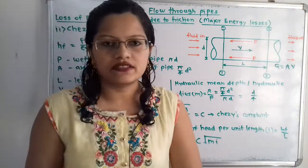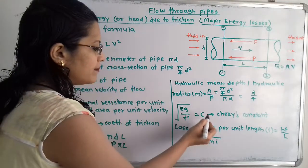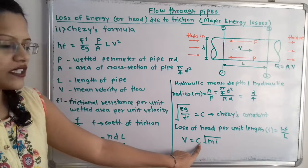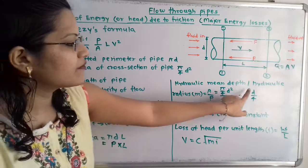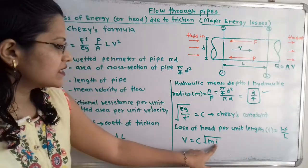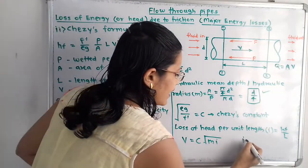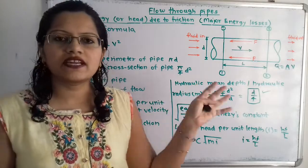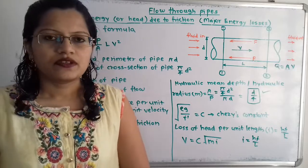The loss of head per unit length is H_F / L, also denoted by I. Using m, C, and I, Chezy's formula becomes: V = C × √(m × I). If Chezy's constant C is given and velocity is known, we can calculate m = A/P or directly use m = d/4. Then I = H_F / L, so H_F = I × L. By understanding these formulas in detail, you can solve any type of question for the calculation of head loss due to friction using Chezy's formula.